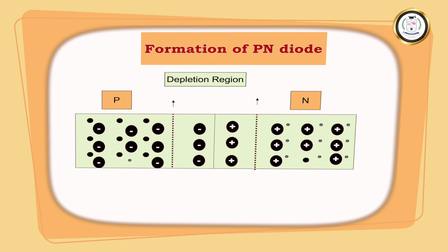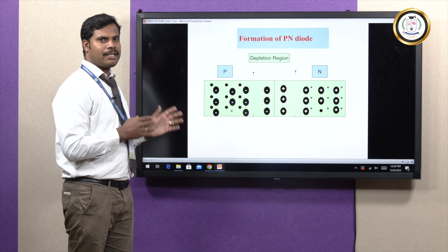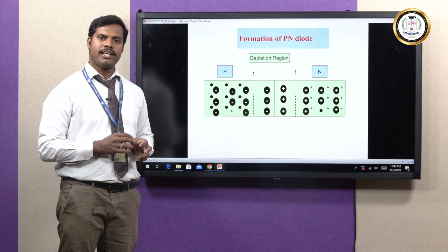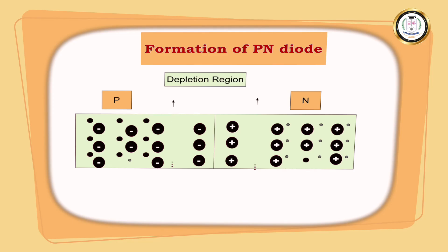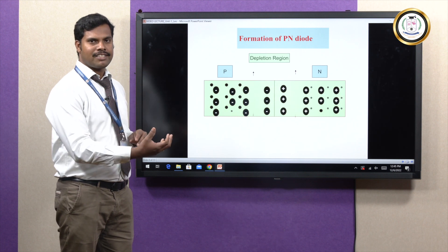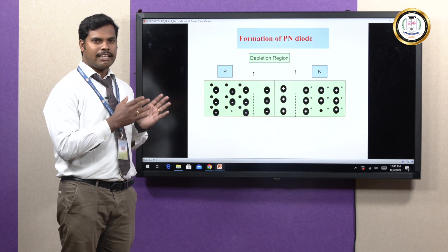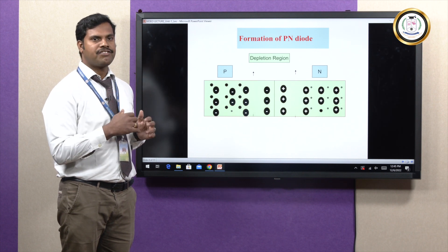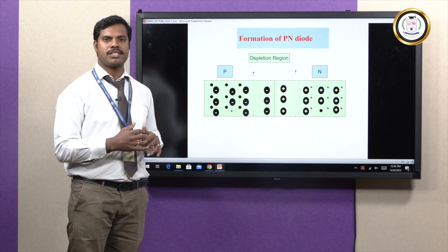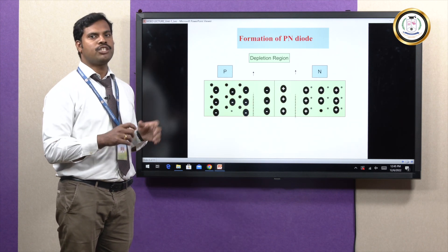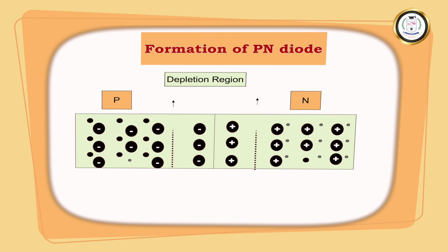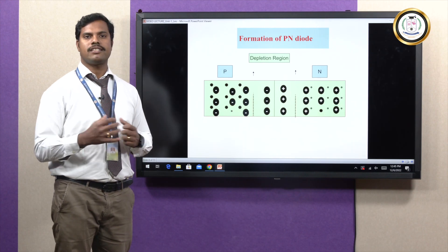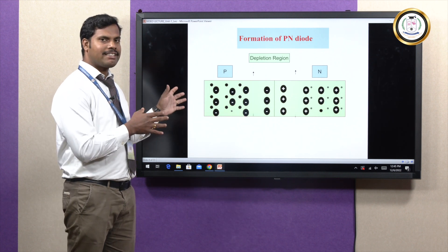The potential barrier voltage for germanium is 0.3 volt and for silicon is 0.7 volt. This potential barrier voltage is also called the cut-in voltage. The depletion region acts as a barrier, preventing the remaining free charge carriers in the N-type and P-type sides from crossing the junction.